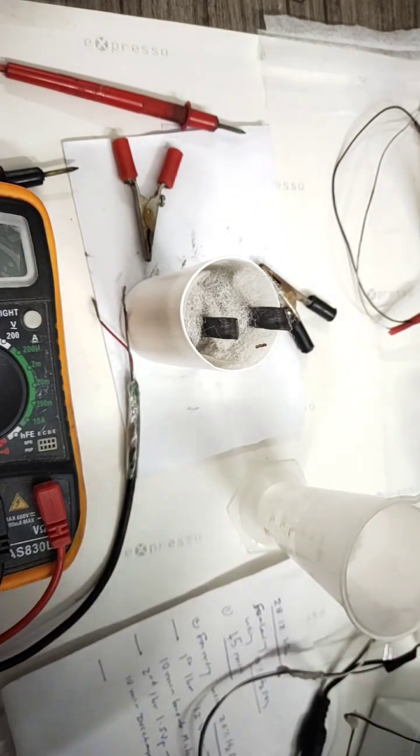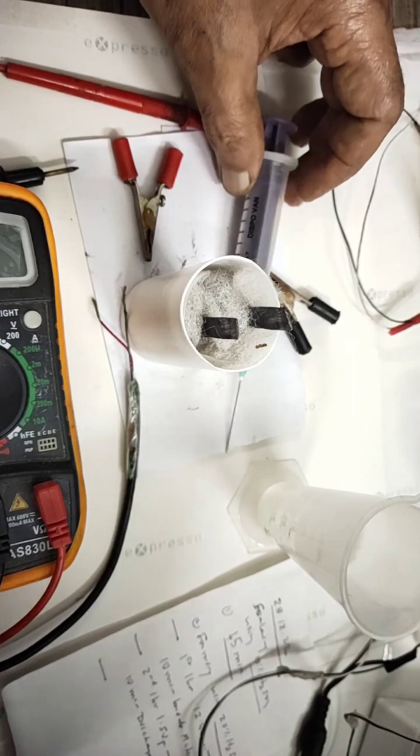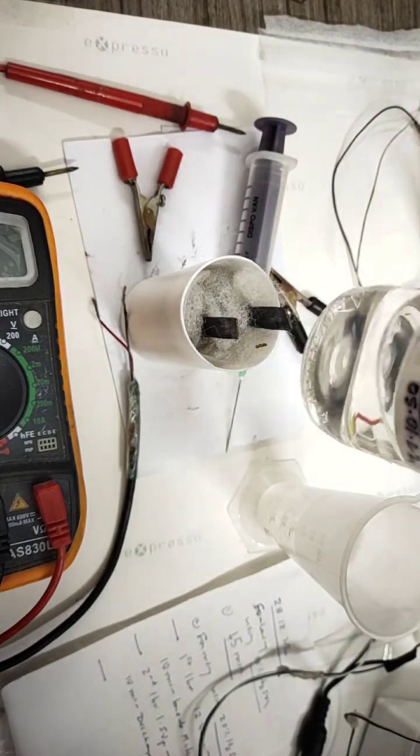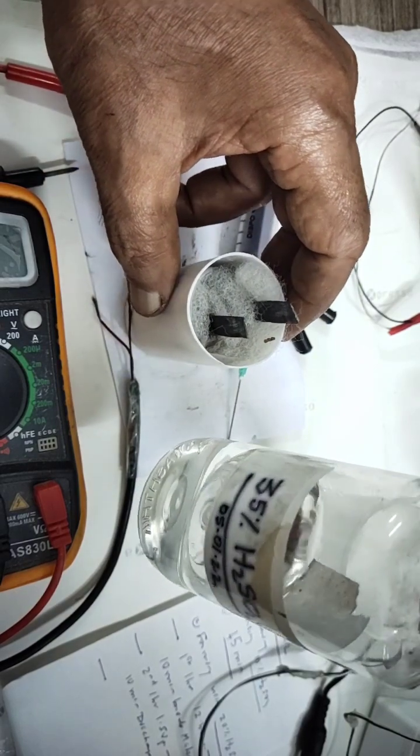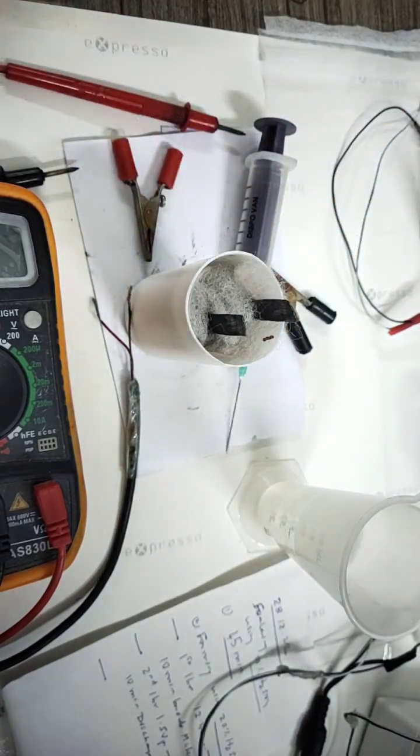Again we will fill this battery with fresh 30 to 35 percent sulfuric acid. 35 is not necessary, we can use 30 also.